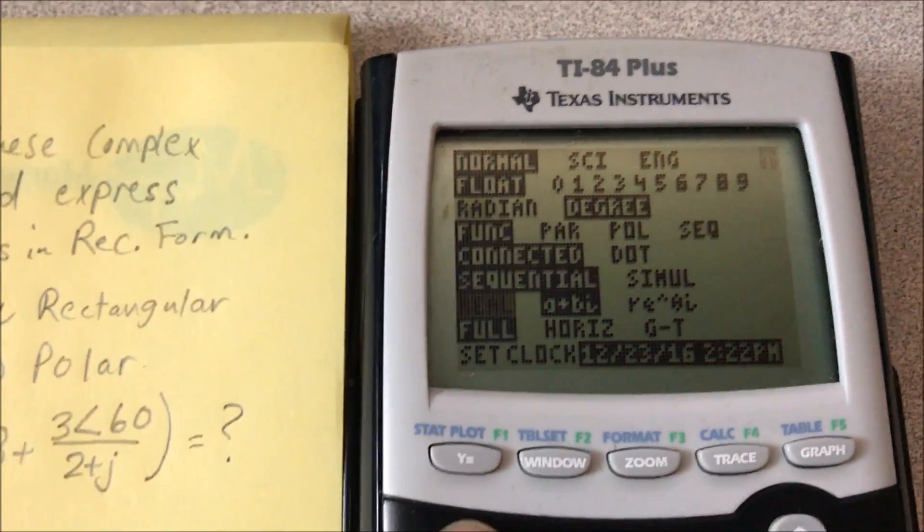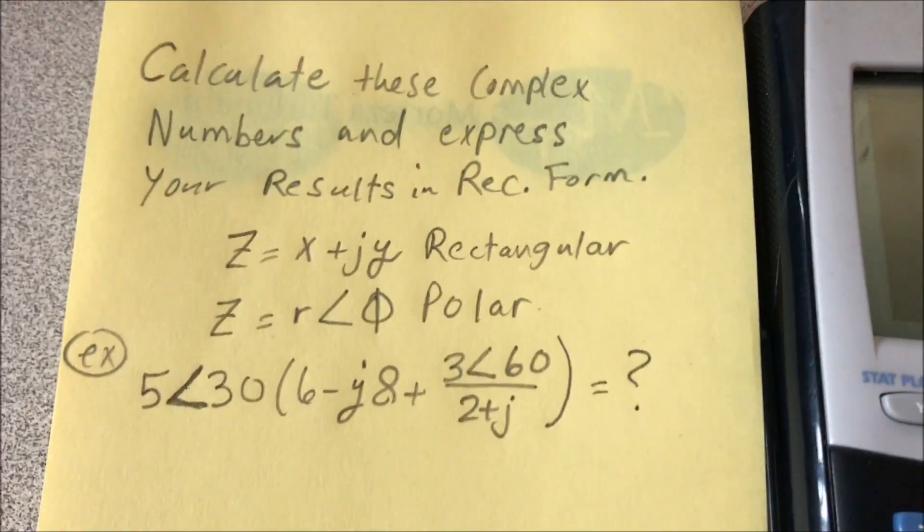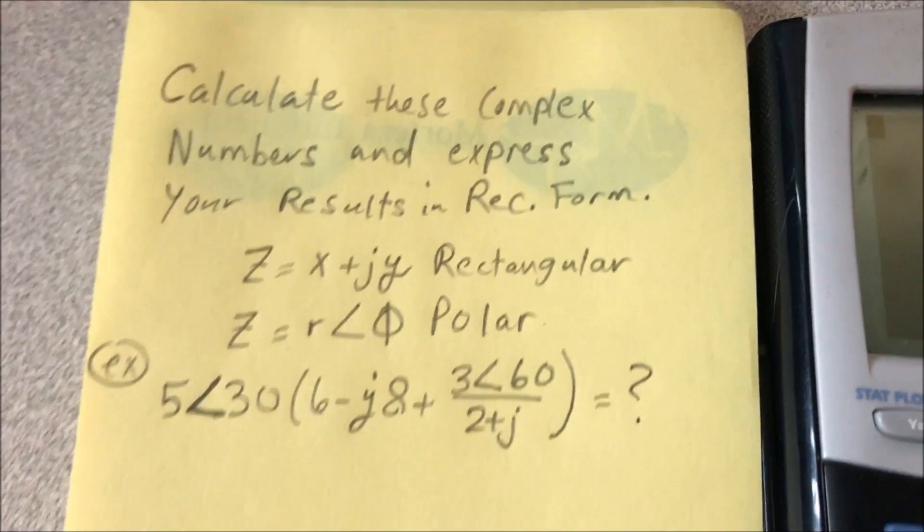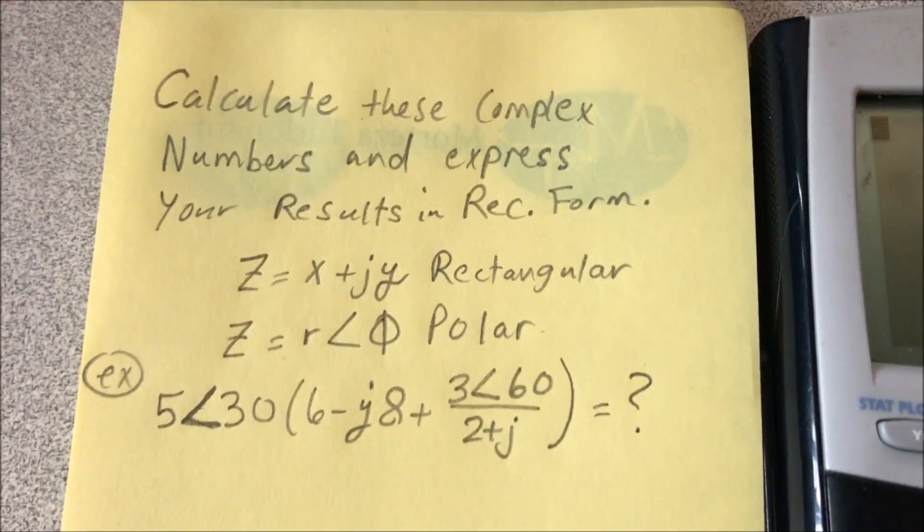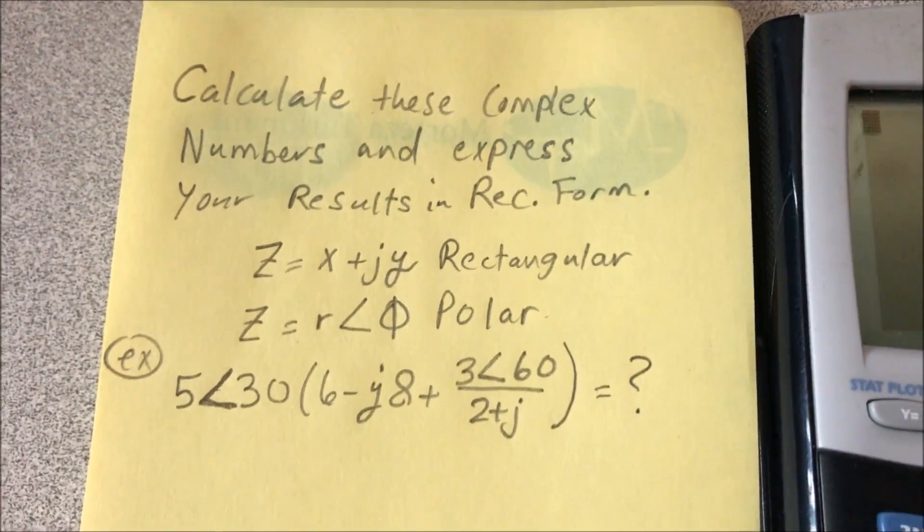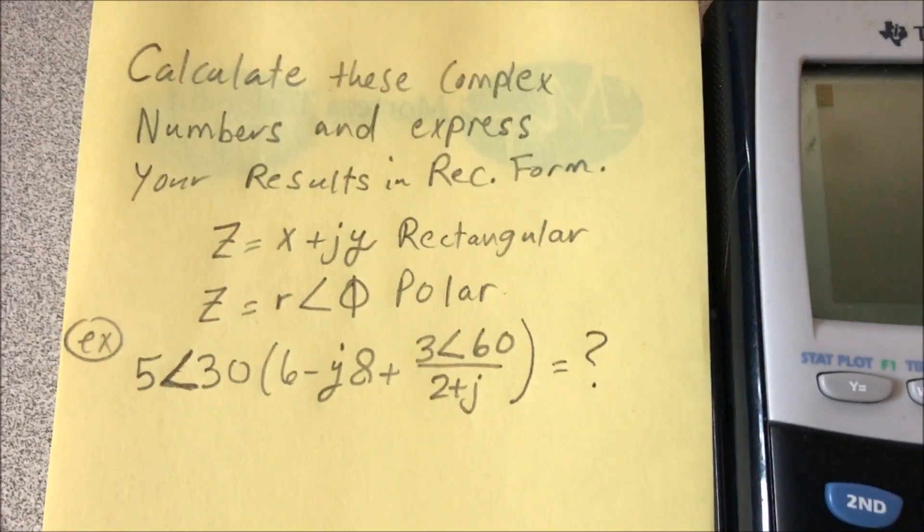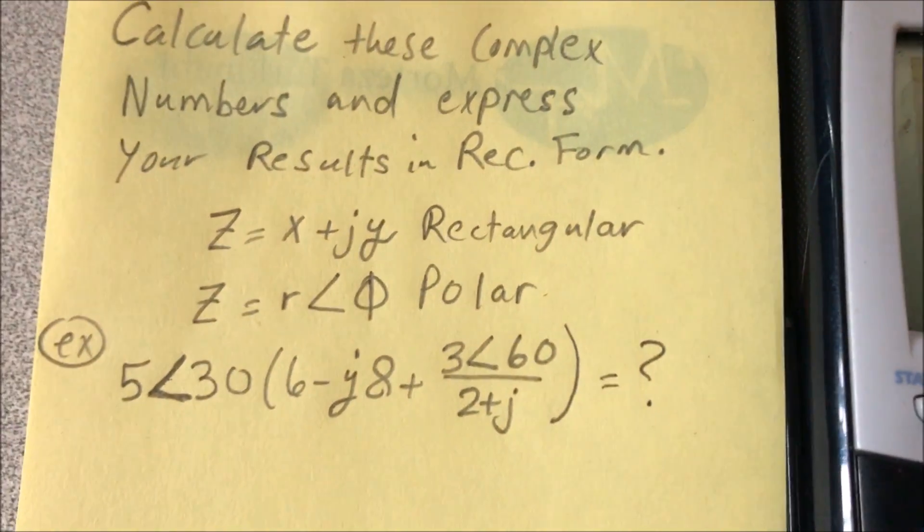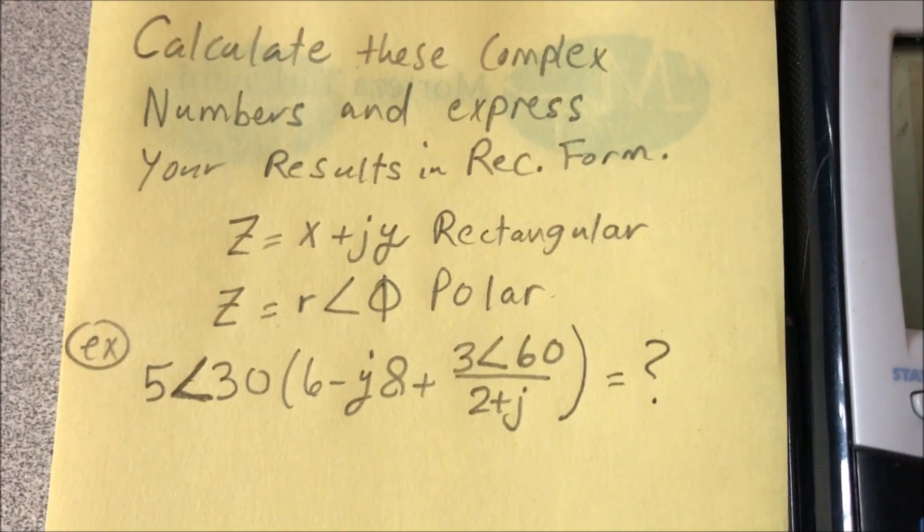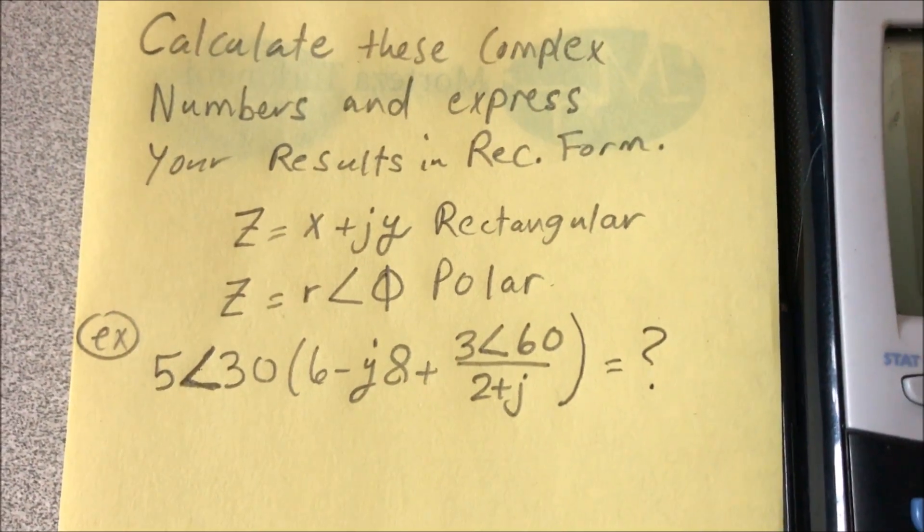are in a plus bi. Here's a problem from Fundamentals of Electric Circuits: calculate these complex numbers and express your results in rectangular form. Rectangular form is X plus jY, and polar is r angle φ.